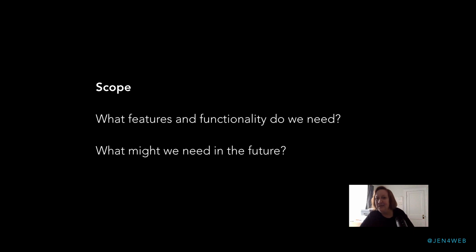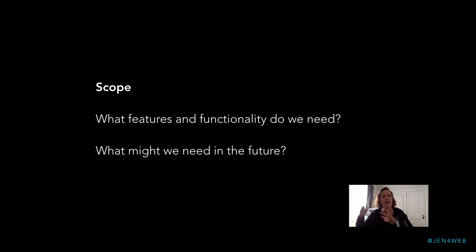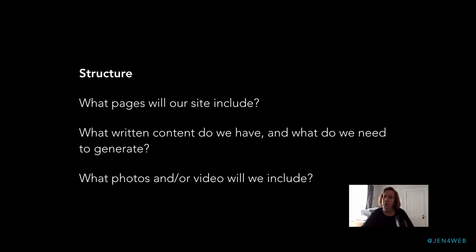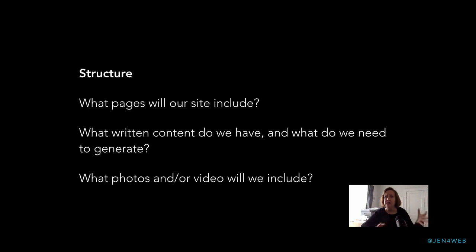Scope: what features and functionality do we need, and what might we need in the future? A lot of people think only about what they need right now and don't plan ahead. What is the minimum needed right now to go forward and prove this thing can make money? Versus what features might we add in the future? Structure: what pages will our site include, and how will we organize them? What content do we already have written — brochures, flyers, a previous website — versus what do we need to generate? And we need to think about photos and video as well.